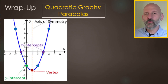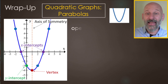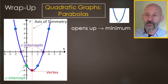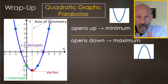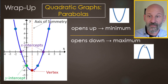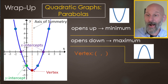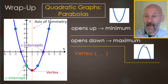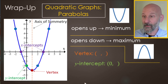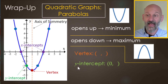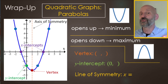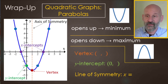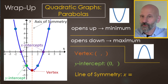To review: a parabola that opens up like a U has a minimum. One that opens down has a maximum. The vertex is the minimum or maximum, written as an ordered pair. The y-intercept, as a coordinate, is always (0, value). The line of symmetry passes through the vertex — its equation is x equals the x-value of the vertex.